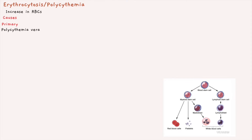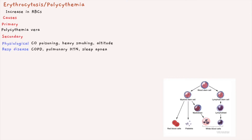There are primary and secondary causes of erythrocytosis. Primary is polycythemia vera — an increase in red blood cells not due to a previous cause. Secondary means there is a distinct underlying cause. This can be physiological, for example from carbon monoxide poisoning, heavy smoking, or high altitude, where the body attempts to produce more red blood cells to take in oxygen, even though carbon monoxide binds hemoglobin more strongly than oxygen.